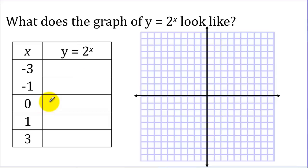Let's start here. So y would be 2 to the 0 power, which we know from our exponent properties is 1. Here we have 2 to the first power, which would be 2. And 2 to the third power here is 8.